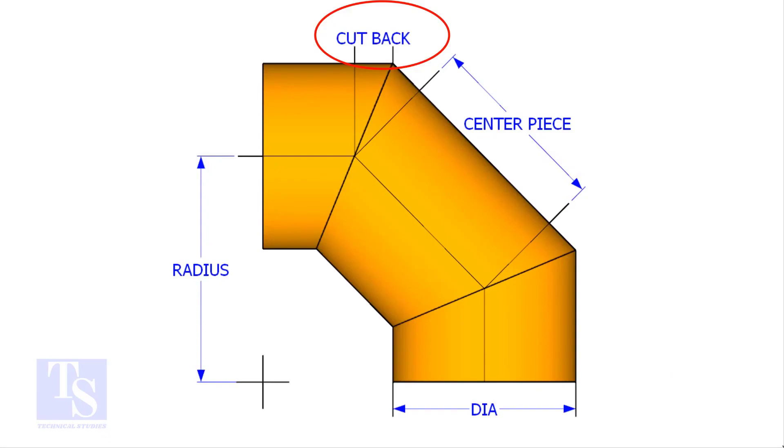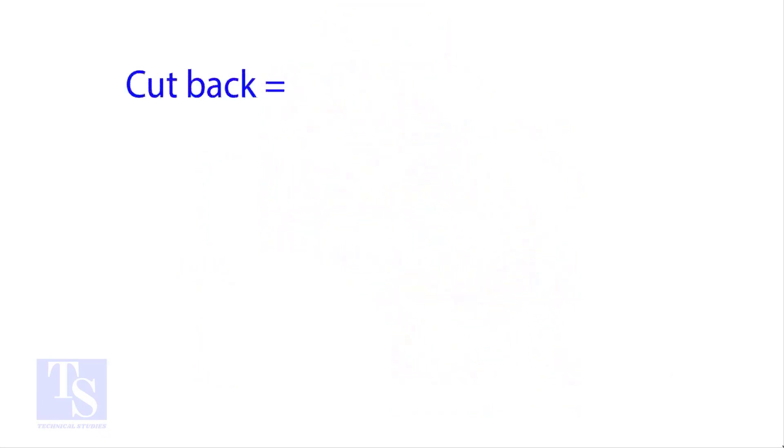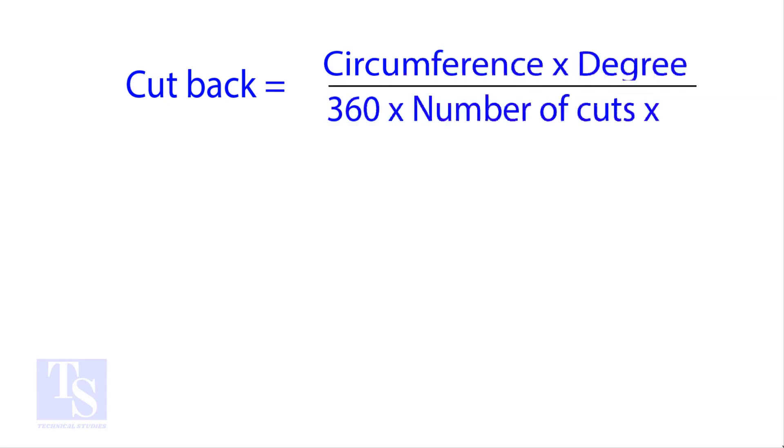The standard method to calculate the cutback is: circumference into the wanted degree, divided by 360 into number of cuts into 2.